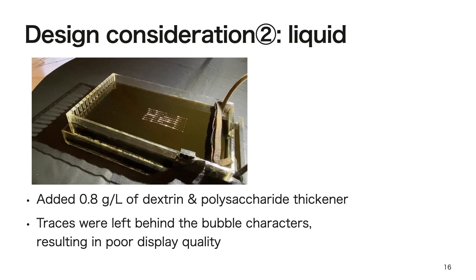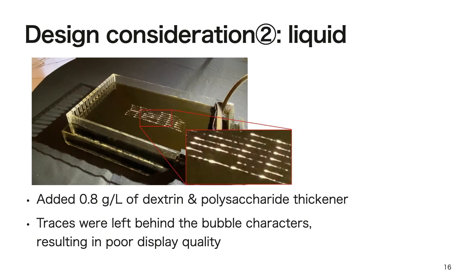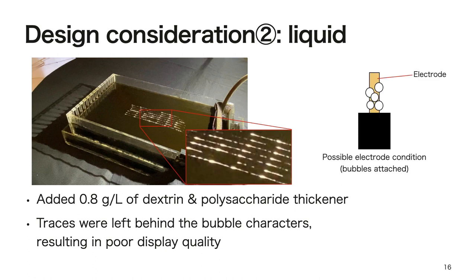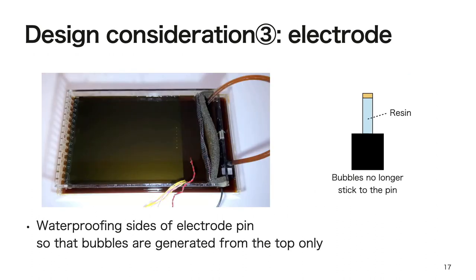The second is the design of the liquid. To further reduce the character distortion caused by the accelerated flow, viscosity was added to the liquid. However, this left a trail of bubbles behind the characters, which reduced the display clarity. We think this is because bubbles stick to the electrodes as the viscosity increases, and after the current is stopped, the attached bubbles gradually rise to the water surface. Therefore, we tried to make it harder for the bubbles to stick to the electrodes. Specifically, we waterproofed the sides of the electrode pins so that only the tops of the pins were in contact with the liquid to prevent the bubbles from sticking. With these three efforts, a bubble display with reduced distortion was realized.